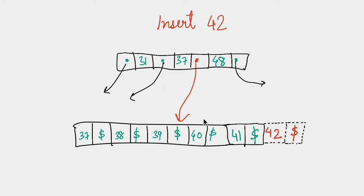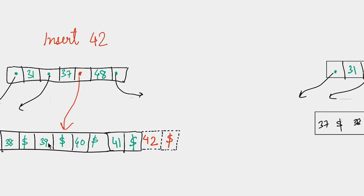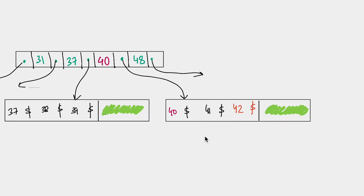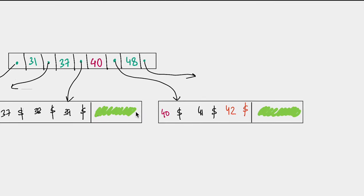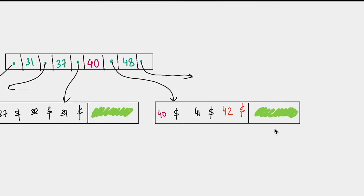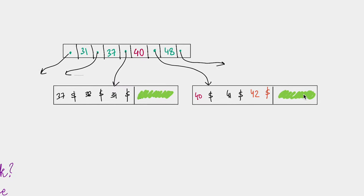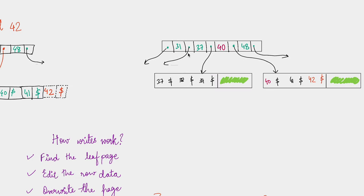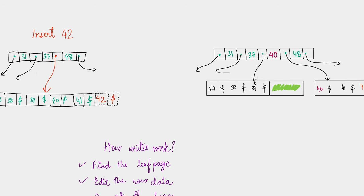Inserting 42 causes the page to grow beyond the page size, so you split it into two. Keys 37, 38, 39 go in one page, and 40, 41, 42 go in another — each page is now half full, with free space to accommodate future writes. You also need to change the parent page: 40 gets inserted between 37 and 48, and you update the pointers so 37–40 reference the left page and 40–48 reference the right page.